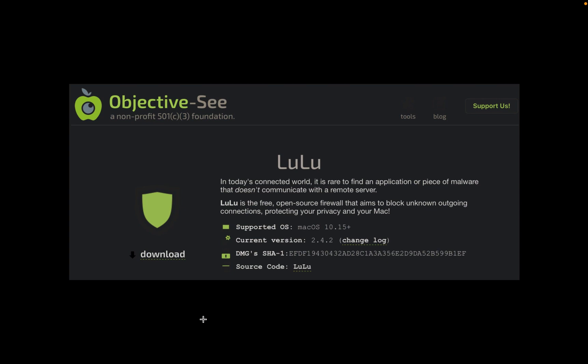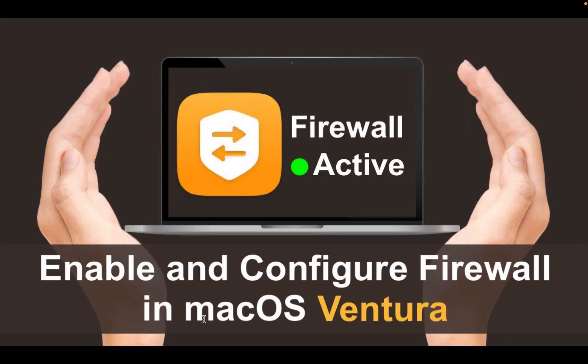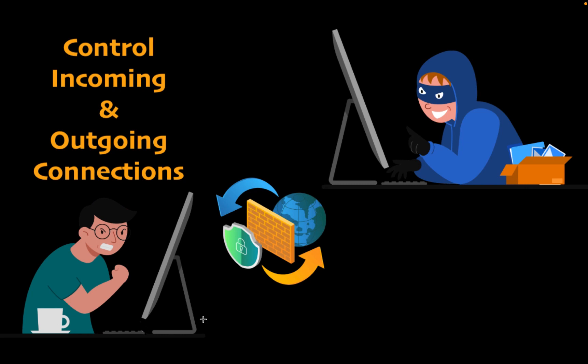Setting it up and using it is fairly straightforward. However, you need to be patient if you are new to these kinds of software — it takes time to feel comfortable using them. I have another video that shows you how to block incoming network connections to your Mac using Apple's built-in firewall. I will leave the link in the description box. By enabling your macOS built-in firewall and installing LuLu, you will be able to control incoming and outgoing network connections and make your Mac more secure.